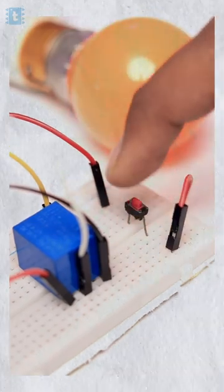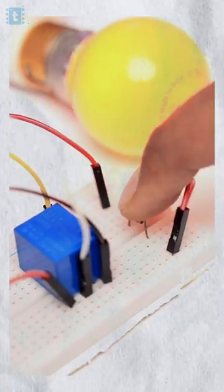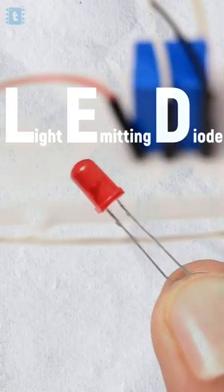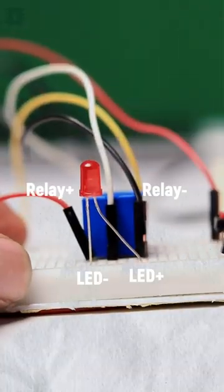So here is a relay with a push button used to control a bulb, which is a pretty common connection. And here if I add an LED, which is also one kind of diode in reverse polarity with the relay.